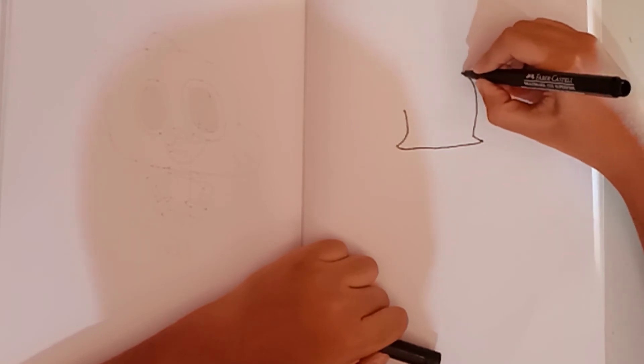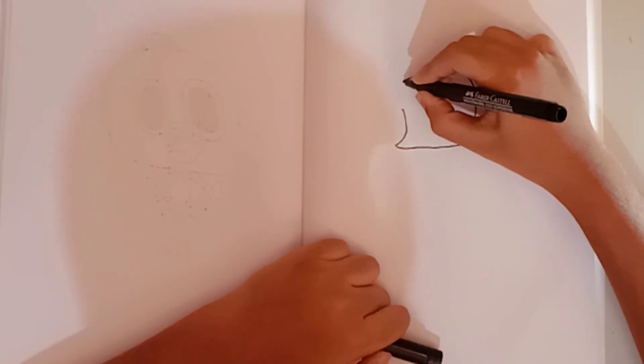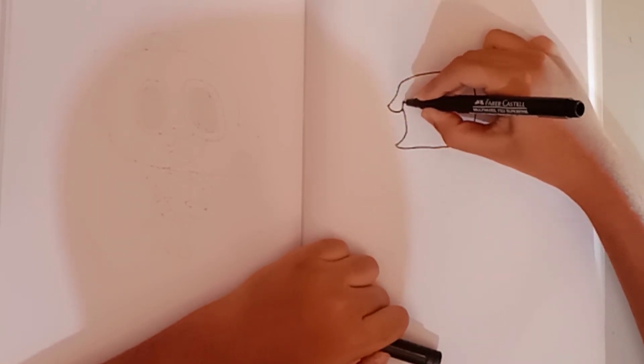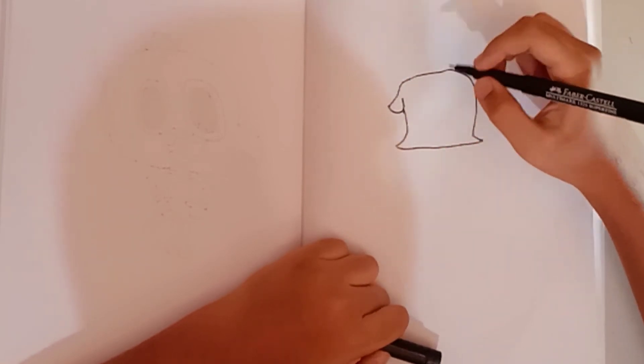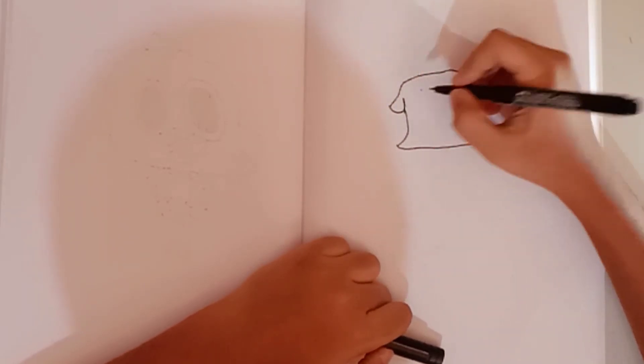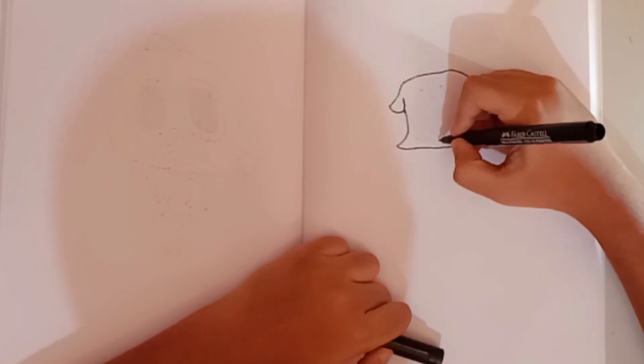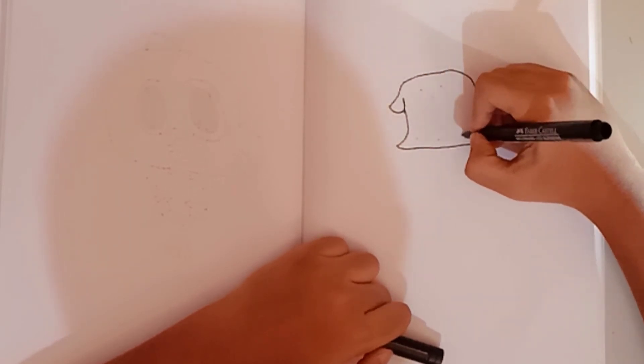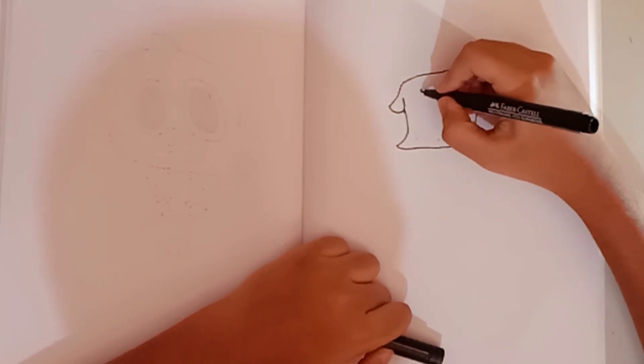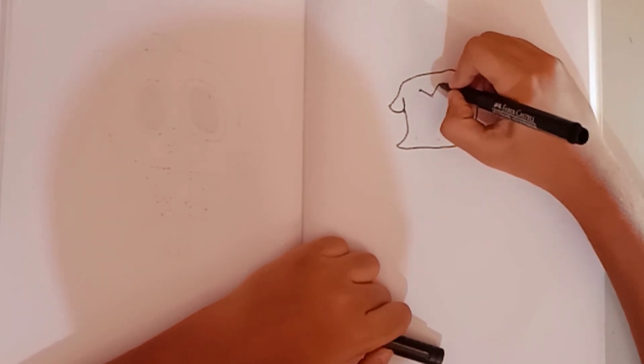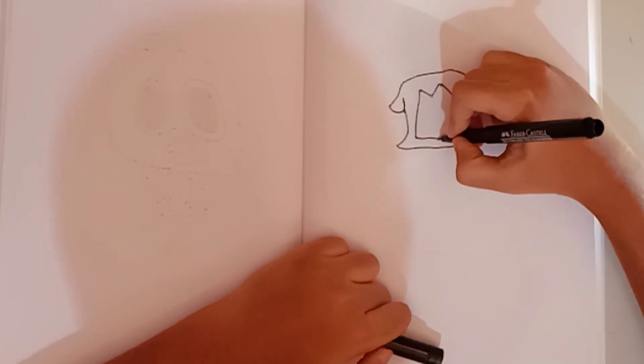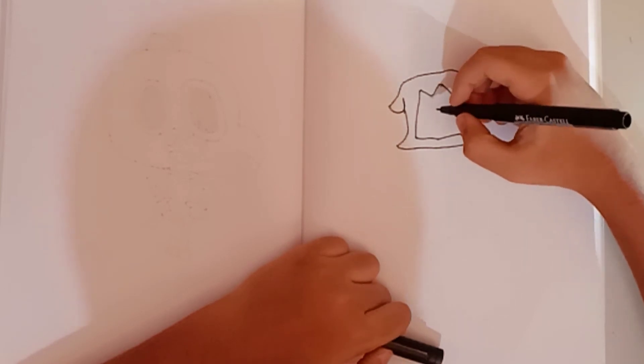If you think that I'm going too fast, you can pause and watch anytime or as many times. Now we put the points like this and we'll join all the points. We'll draw a V, another curve line like that.